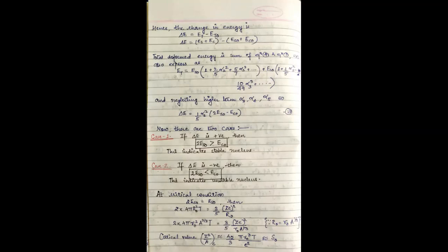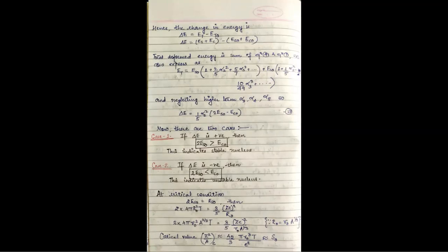This equals ES0 times 1 plus 2 by 5 alpha 2 square plus 5 by 7 alpha 3 cube and so on plus EC0 times 1 plus 1 by 5 alpha 2 square minus 10 by 49 alpha 3 cube plus so on. From the above equation we neglect the higher terms like alpha 3, alpha 4, alpha 5 and so on and hence finally we get the expression for delta E as delta E equals 1 by 5 alpha 2 square times 2 ES0 minus EC0.